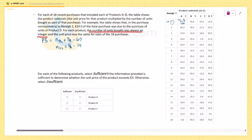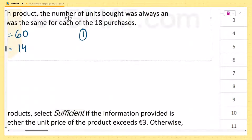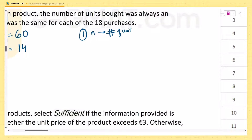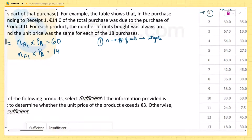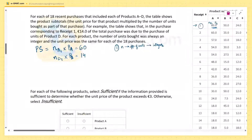For each product, the number of units bought was always an integer. So if n represents the number of units, it was always an integer — we could have bought one unit, two units, three units, but not half a unit or three-quarters of a unit.